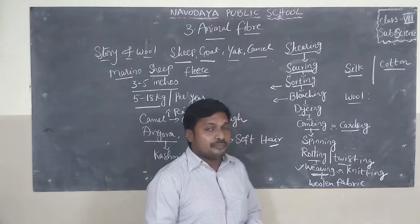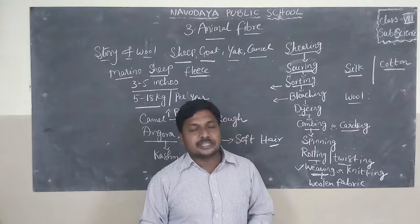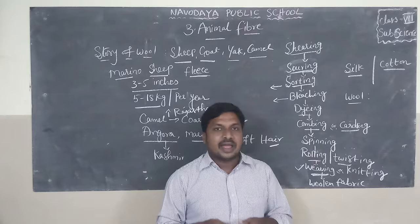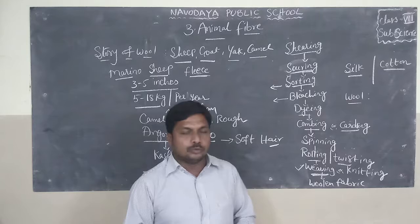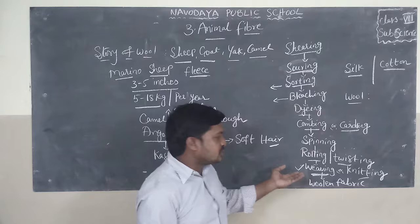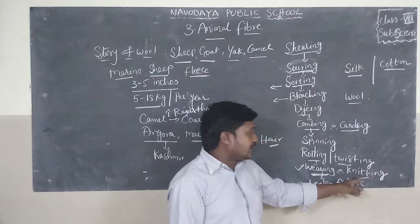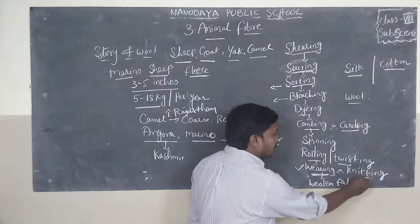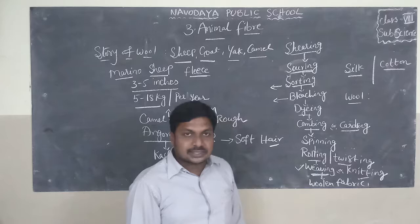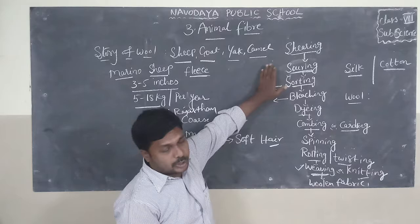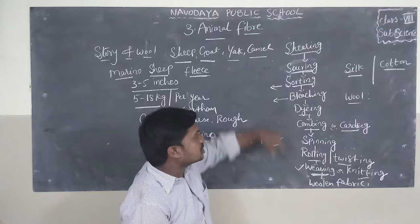Weaving is of two types: one is by hand, and another is by power looms or hand looms. Knitting is done by hand. After weaving or knitting, the woolen fabric is ready. This is the flow chart showing how woolen fabric is produced. These stages are very important from the exam point of view — they may ask a four-mark question. Please draw this flow chart in your notebook.